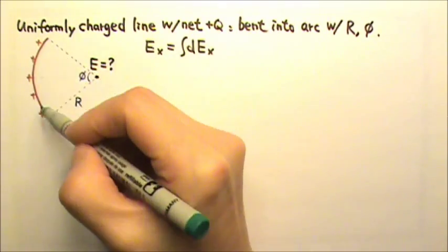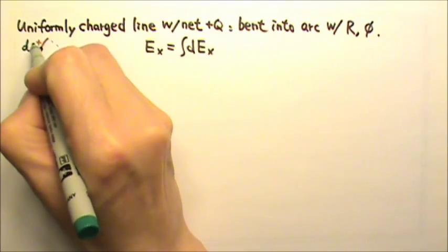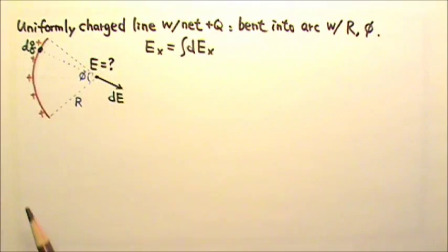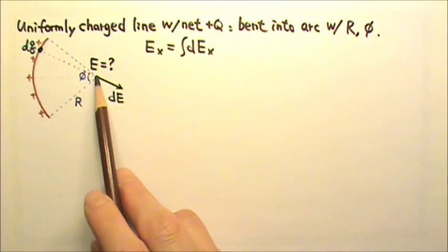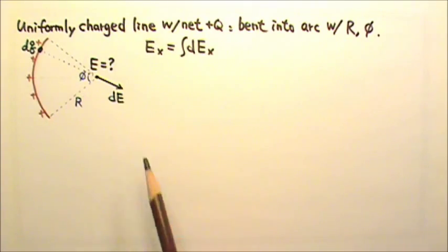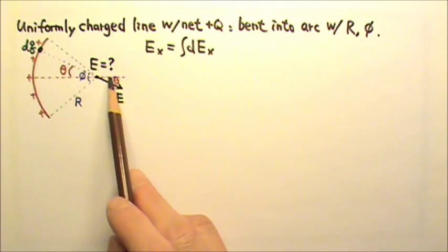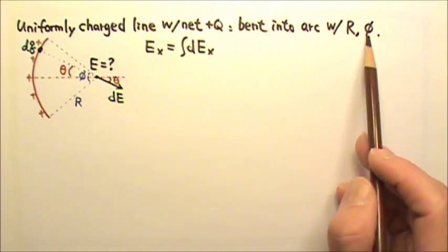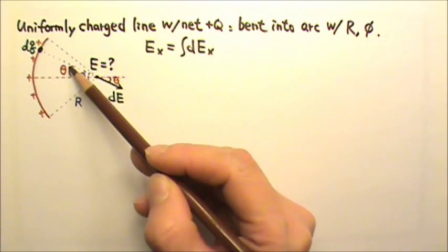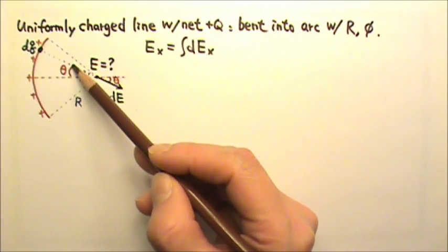We'll chop the charge into little pieces — let's say this is our little piece of charge dq. This point charge dq gives us an electric field dE pointing away from this positive point charge. If this angle here is theta, then that angle is also theta. I already have an angle phi, but that's this total arc angle. The angle for a given piece is a different variable, so I'm naming it theta.